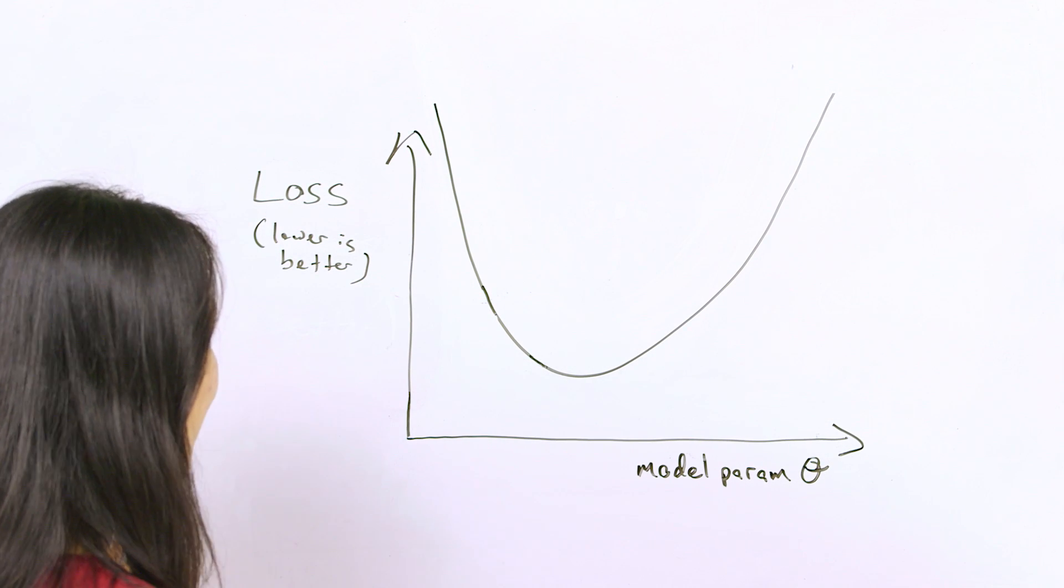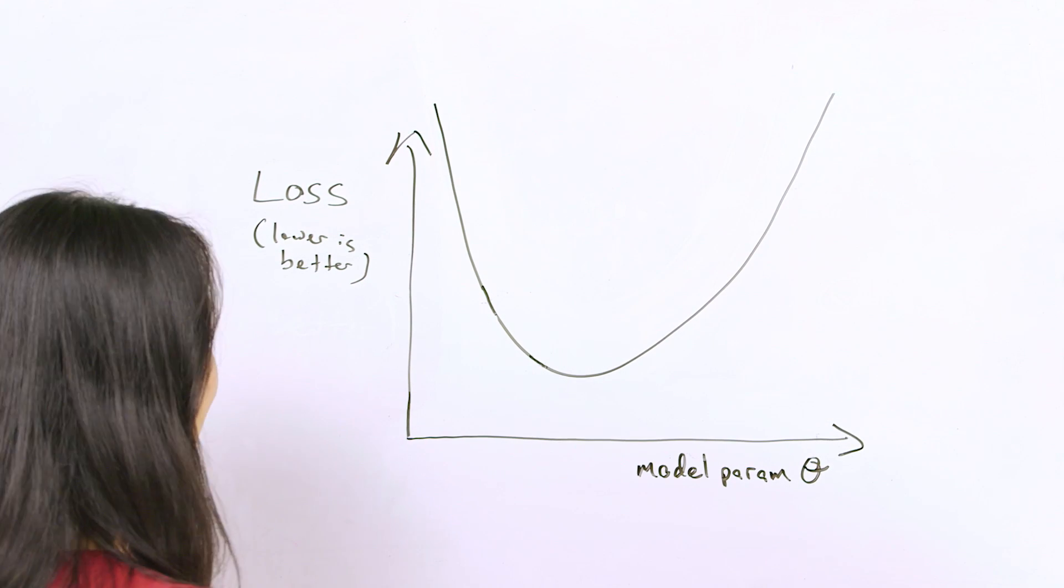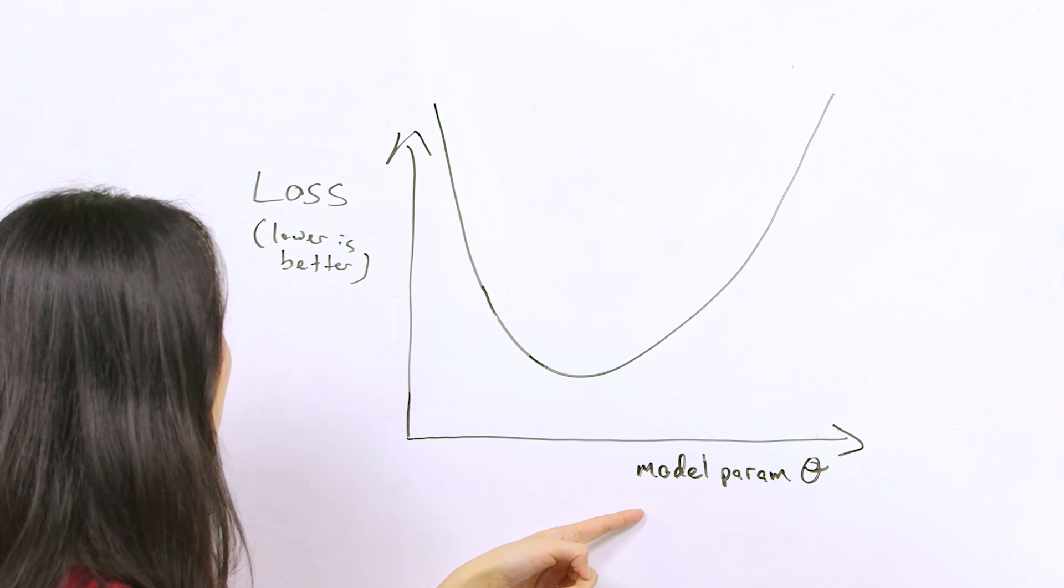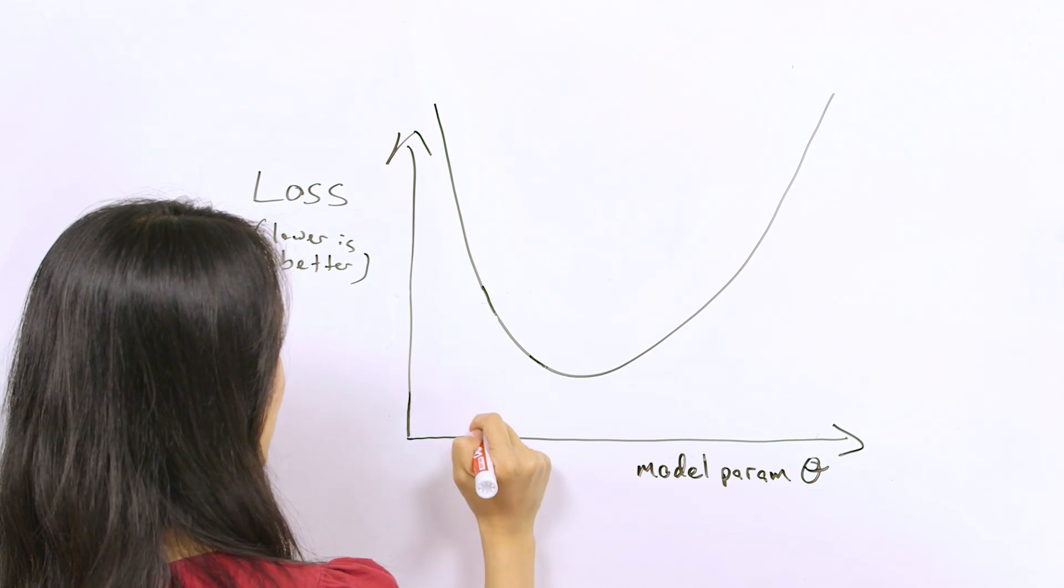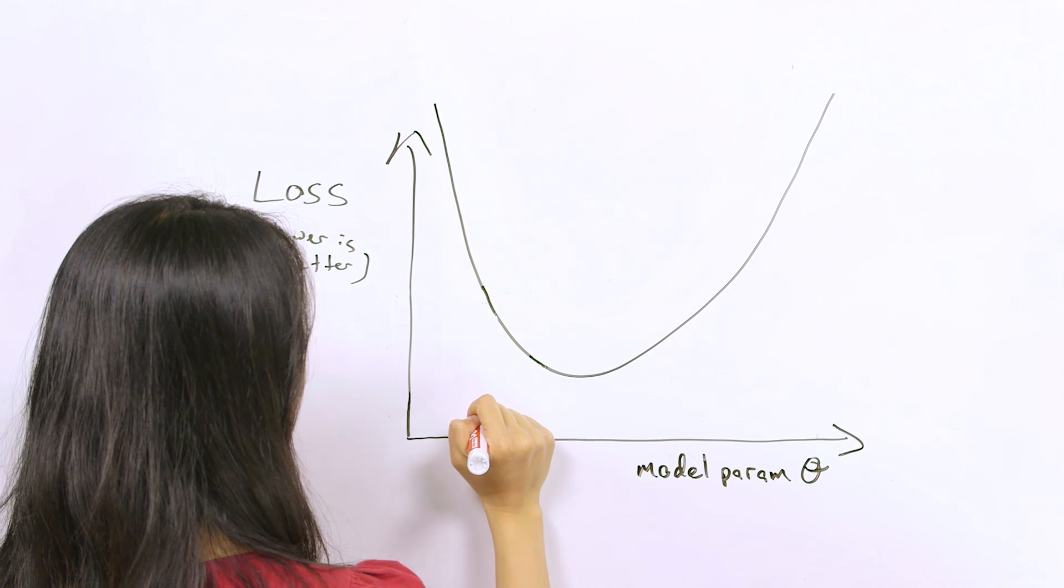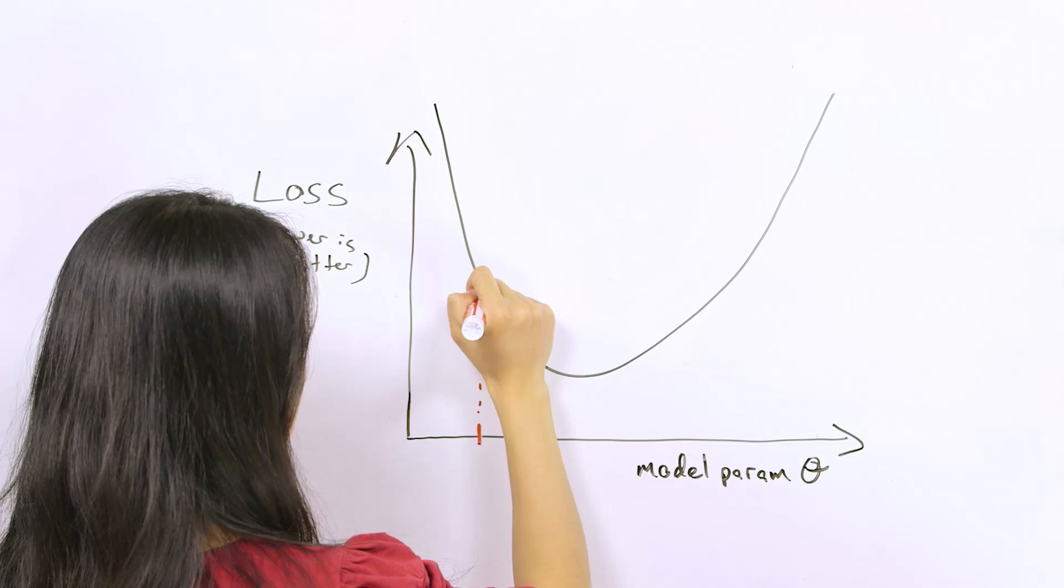Pretend in one dimension this is our loss function that maps our single model parameter theta to the loss. If we start off at a random value or initialization for theta, then we achieve the corresponding loss.